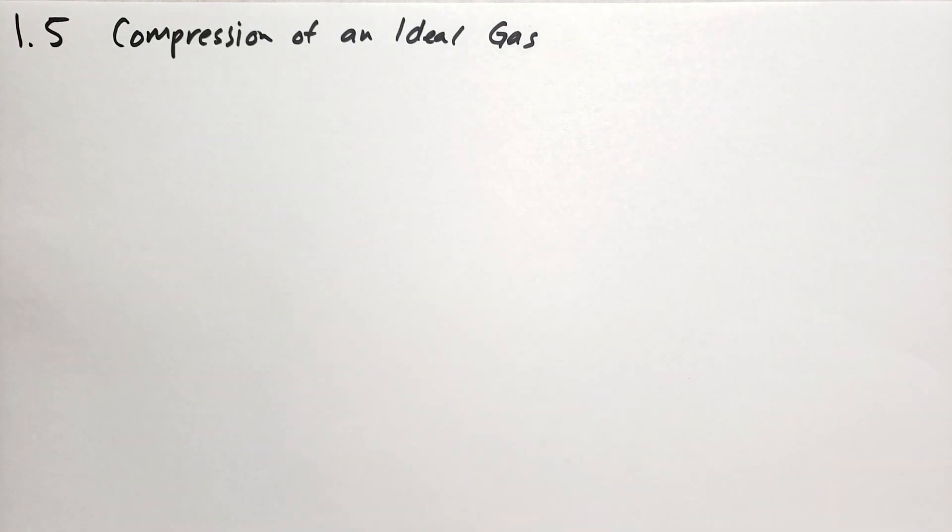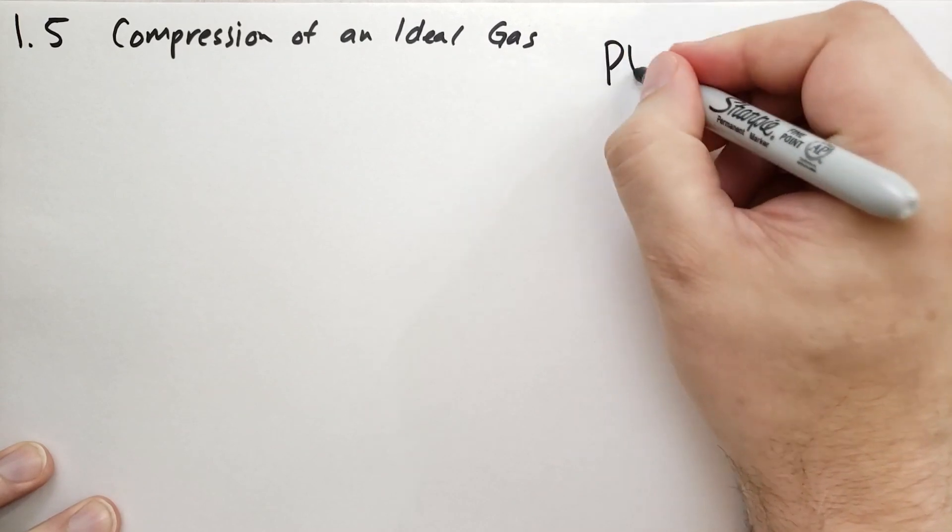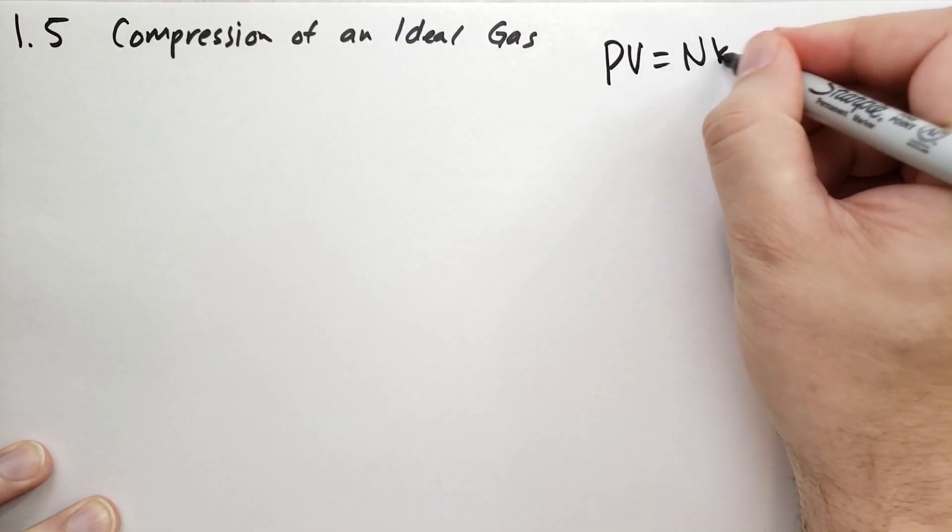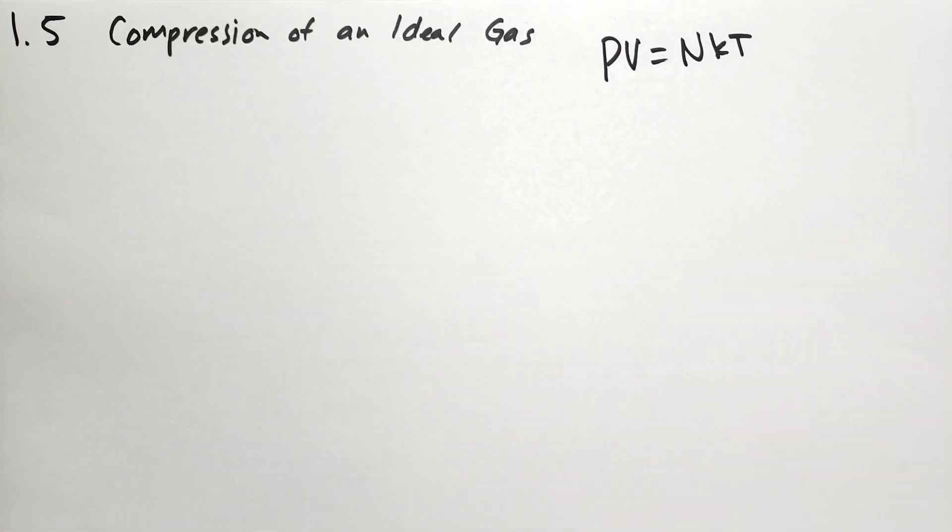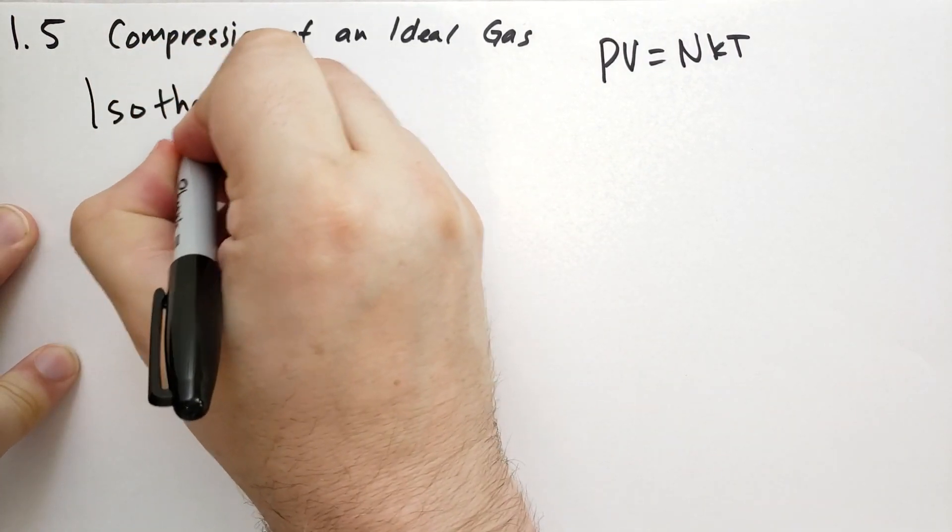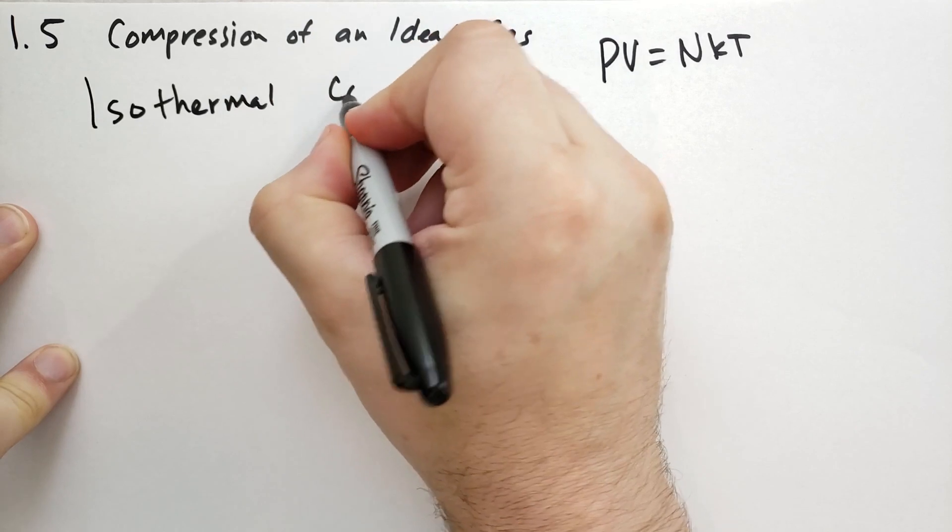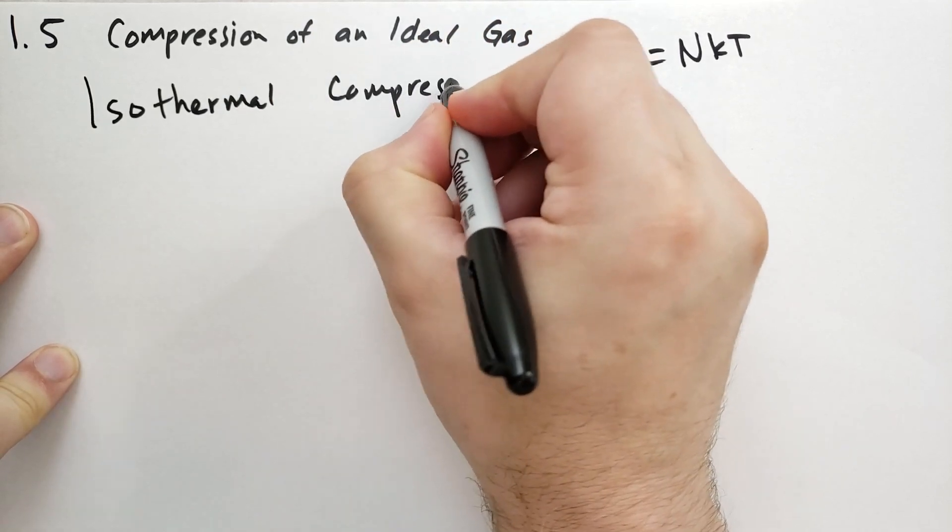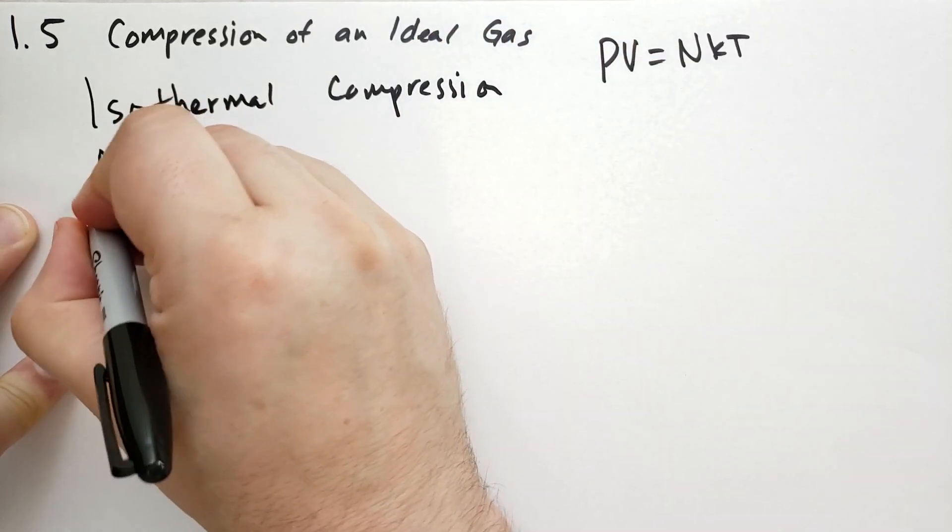We're going to be using an ideal gas because the equation is easy to work with and also because it's fairly close to how real gases behave when they're in gas form. We're going to consider two types of ways that you can compress the gas. One is called isothermal, and the other is called adiabatic.